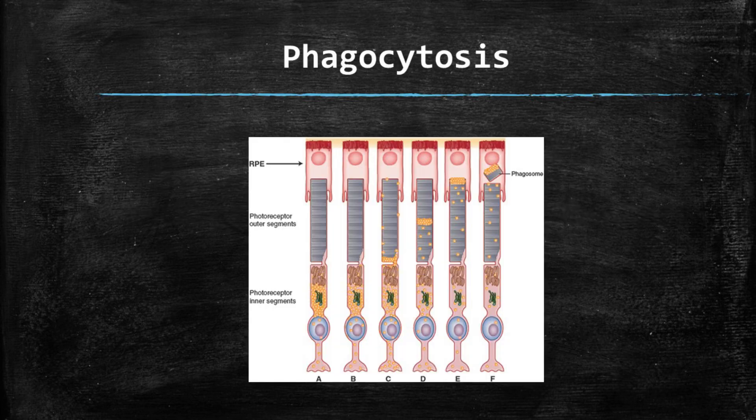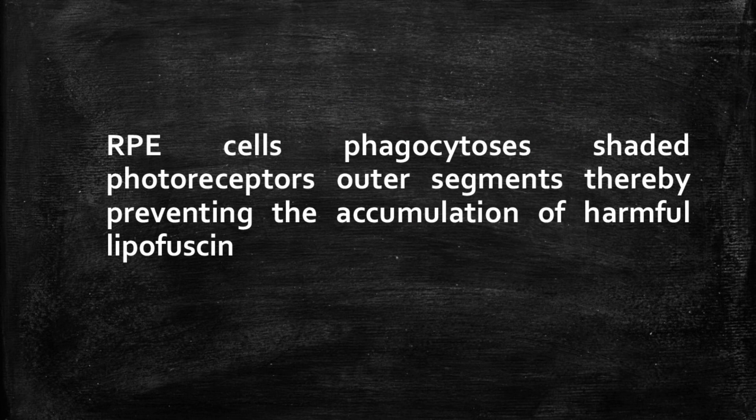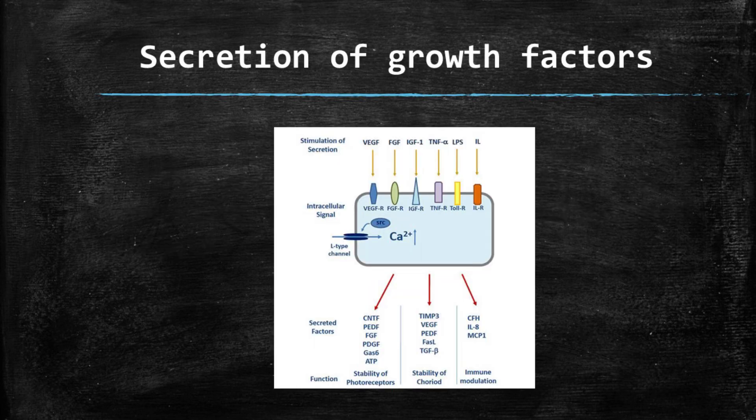Fourth, phagocytosis. RPE helps to remove shed photoreceptor outer segments. This helps to prevent accumulation of lipofuscin in the neural segment of the retina, as well as help in the harvesting of retinal.